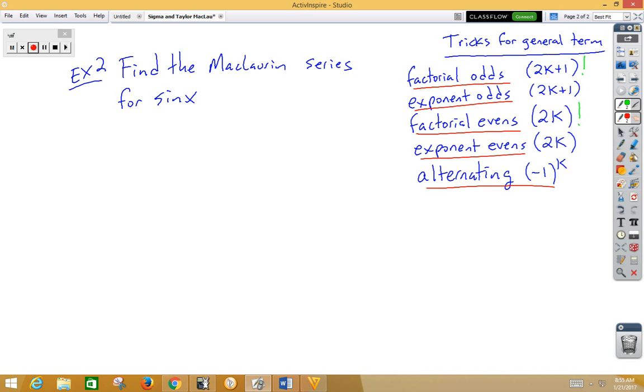Well, so again, I suggested that you memorize several terms for the Maclaurin series for sine x. So we know that it starts with x, and then it's negative x cubed over 3 factorial plus positive x to the fifth over 5 factorial minus x to the seventh over 7 factorial, and so on.